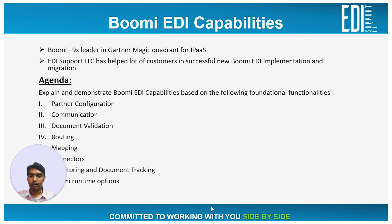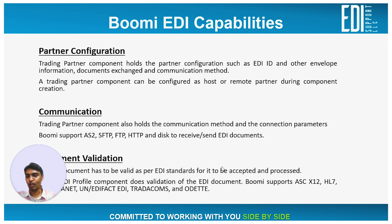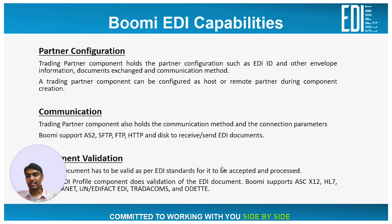Let's start with partner configuration. A company typically does EDA with many trading partners. The company's EDA application maintains all the partner configuration so that it can identify the sender partner using the EDI IDs present in the document. Similarly, the EDA system should also send documents with appropriate EDI IDs so that the document sent is recognized by the partner's EDA system.